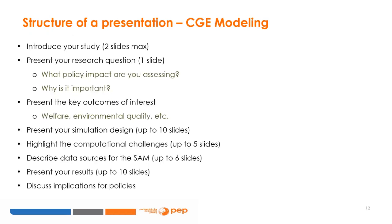For a CGE paper, the first two steps are identical to those of an empirical paper. Introduce your study using a maximum of two slides, then state your research question in one slide — for example, what policy impact are you assessing and why is it important? Then state the key outcomes of interest, such as social welfare, environmental quality, etc. Use up to ten slides to present your simulation design, highlighting computational challenges in up to five of those slides. Use up to six slides to describe data for the SAM, up to ten slides to present your results, and then discuss implications for policies.